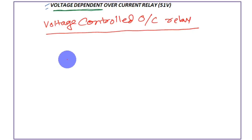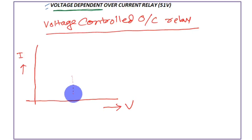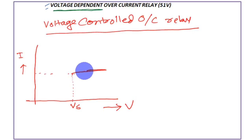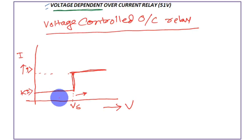Let us draw the pickup characteristics of the voltage controlled overcurrent relay. On the x-axis is voltage and on the y-axis is pickup current I. There is a set voltage point Vs. Above this voltage — when the generator terminal voltage is greater than Vs — the pickup current is higher, set to I_greater_than. Below Vs, the pickup current is reduced to a lower value Ki_greater_than.